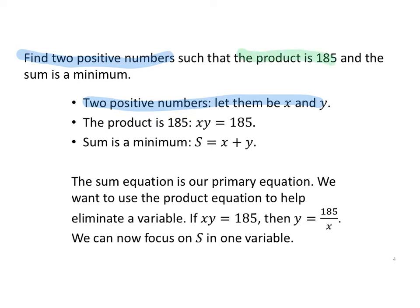The product is 185, so xy = 185. The sum is a minimum: S = x + y. Now the sum equation is our primary equation. Notice this primary equation has two variables. We want to use the product equation to help eliminate one of those variables.